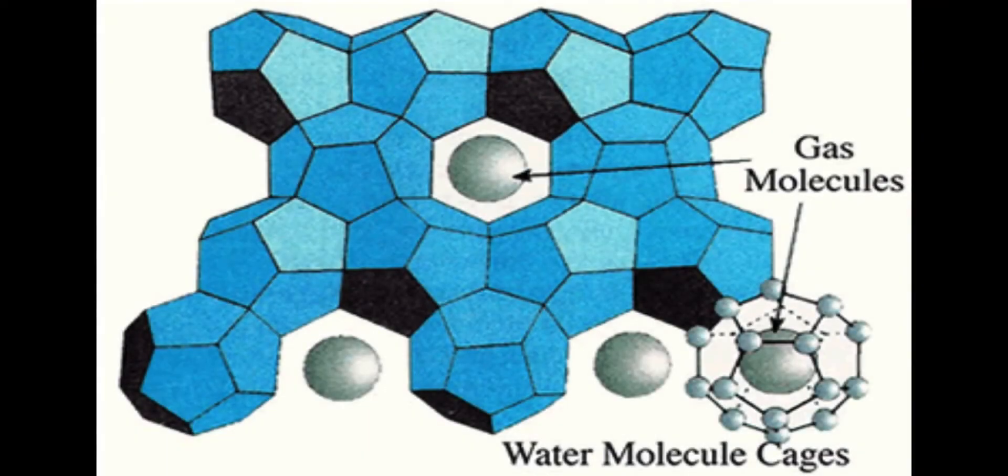As you can see in the illustration provided, hydrocarbon molecules occupy void spaces within the lattice of water molecules. Natural gases with higher specific gravities form hydrates at lower pressures compared to those with lower specific gravities.